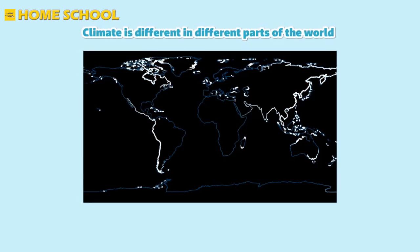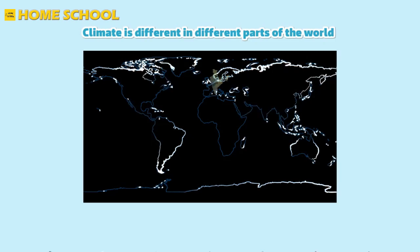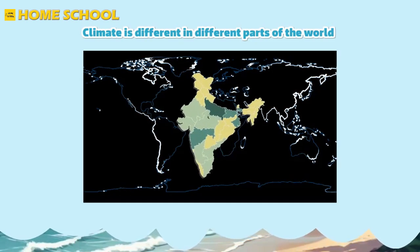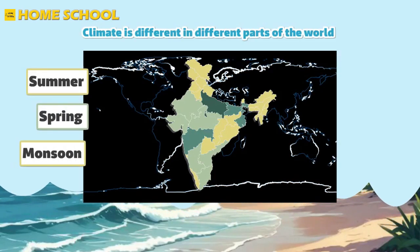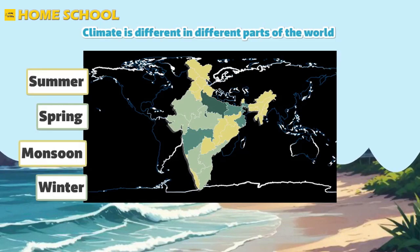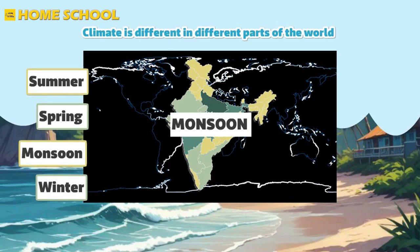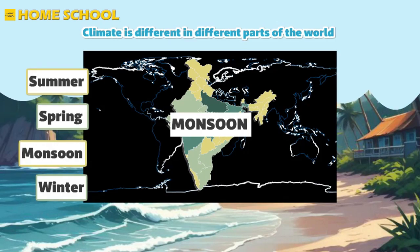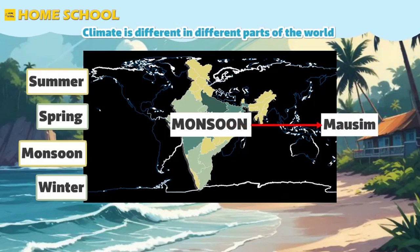We know the climate is different in different parts of the world. In India we enjoy different kinds of seasons: summer, spring, monsoon, and winter. Indian climate is basically known as the monsoon type of climate. Here, the word monsoon is derived from the Arabic word 'mossim' which means seasons.